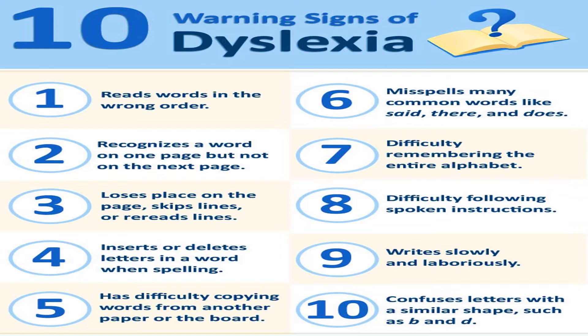Number four: inserts or deletes letters in a word when spelling. Number five: has difficulty copying words from another paper or the board. Number six: misspells many common words like 'said,' 'there,' 'does,' etc. Number seven: difficulty remembering the entire alphabet.